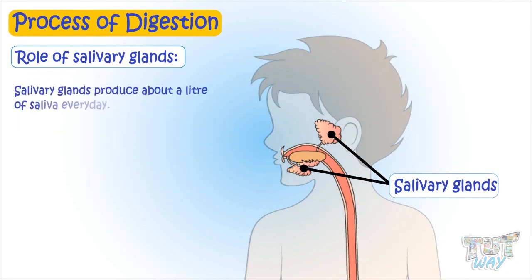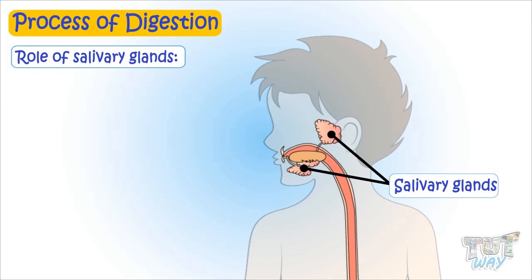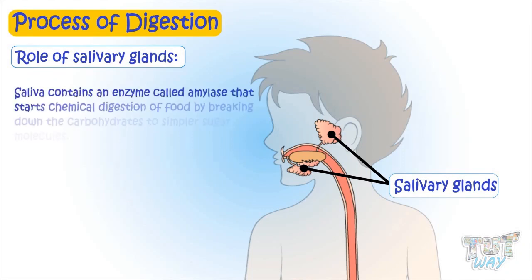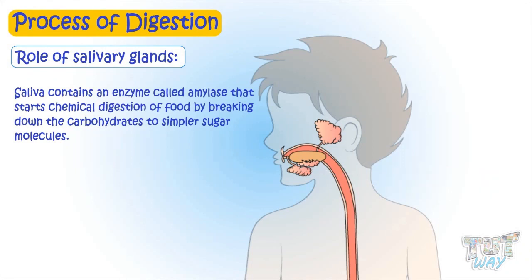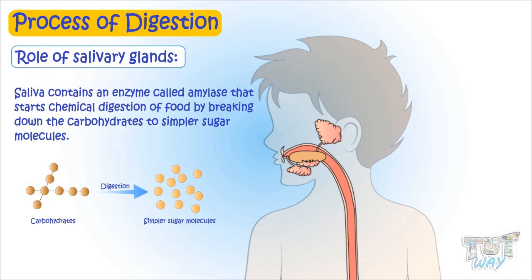Salivary glands produce about a liter of saliva every day. Saliva contains enzymes called amylase, which starts the chemical digestion of food by breaking down the carbohydrates into simple sugar molecules.